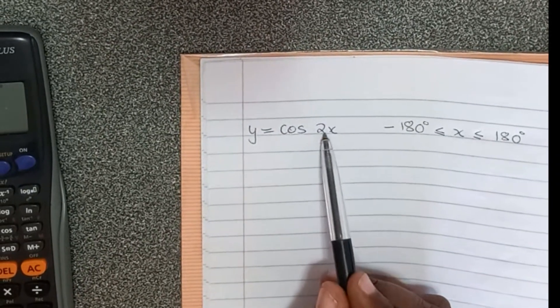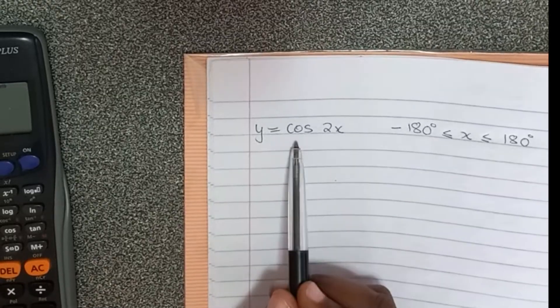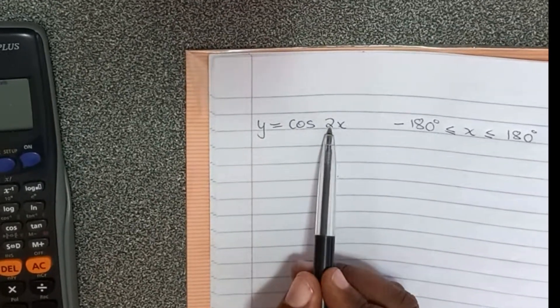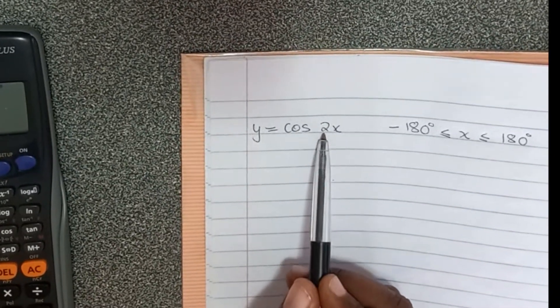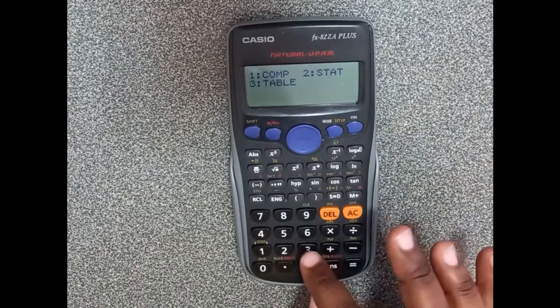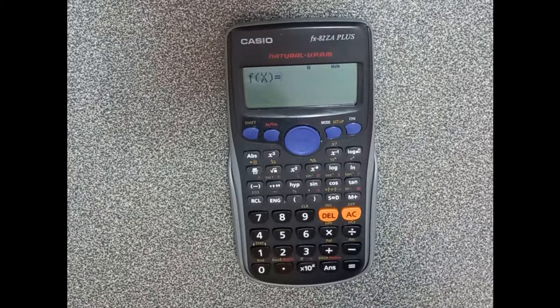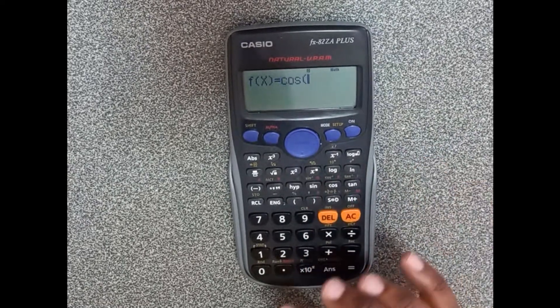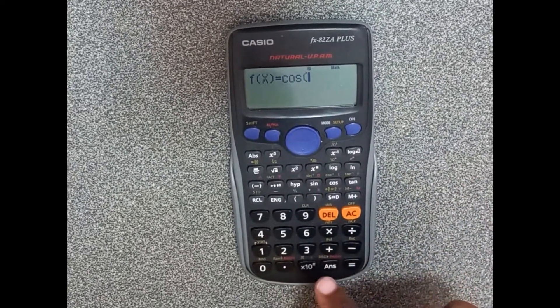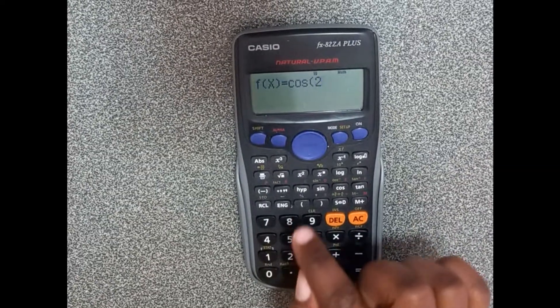It's not going to be 90. Cos and sine is 90, but when it has that number, you take the 90 and divide it by that number. Let's do it. We start mode 3, and then we write our function. It's cos, so it's cos, and then you have a 2.